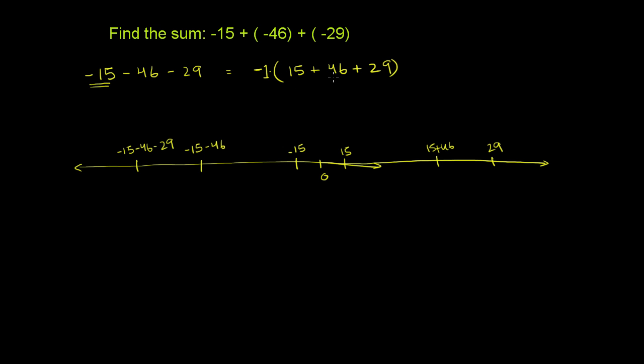And now this is pretty straightforward. 15 plus 46 plus 29. Let's just add those up. So I have 46 plus 15 plus 29.